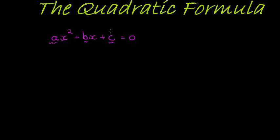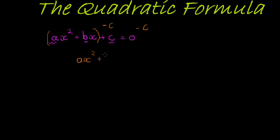So how do we complete the square? Well, let's just go through the steps. First, we want to get these two terms grouped on the one side and c on the other side. So I'm subtracting c on both sides, so that I'm left with ax squared plus bx is equal to negative c.